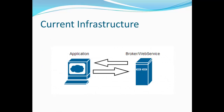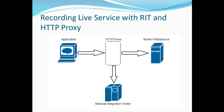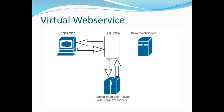This is our current infrastructure — we have an application that's sending a request to a broker that's exposing a web service and getting a reply back. Then we're going to record the live service with Rational Integration Tester and an HTTP proxy. This is going to sit in between the application and the web service and record the transport traffic that goes through. The HTTP proxy is going to route the messages into Rational Integration Tester so that we can record it. And then later, once we have a virtualized web service, we no longer need the broker web service anymore.